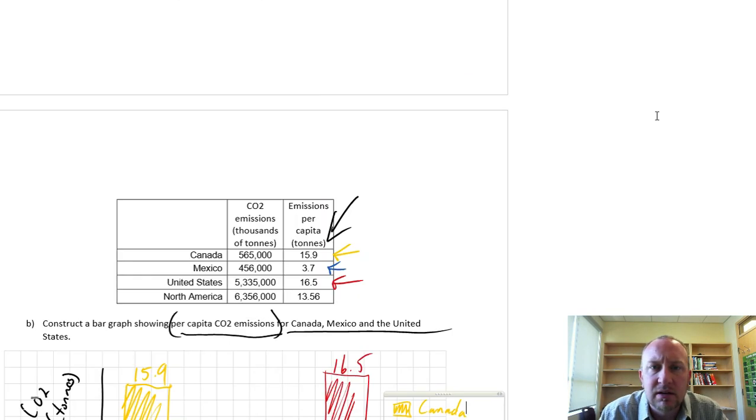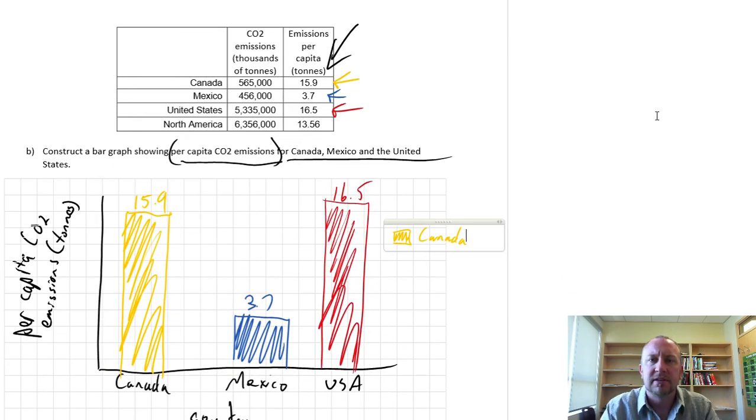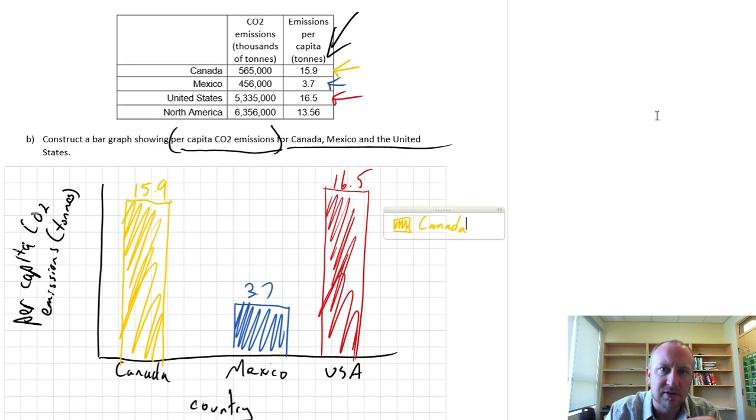So here again, we've got a bar graph, tells an interesting story, tells the story in a little different way than our first bar graph did, but certainly makes it easy for the reader, whoever's looking at this, to look at that and say, wow, Canada and the US, practically the same, as far as per capita emissions. Mexico is substantially less. So I hope that helps produce bar graphs. Thanks again for watching.